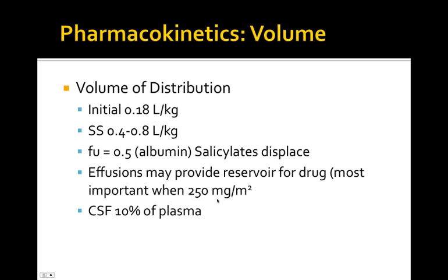This is most important when you get into very high doses, like 250 milligrams per meter squared — you're going to see the drug concentrating in these effusions and not being eliminated as quickly. About 10% of the plasma concentration will be found in the CSF. So if you're treating a cancer present in the CNS and you want to penetrate the CSF, concentrations will be about a tenth of what's in the plasma.